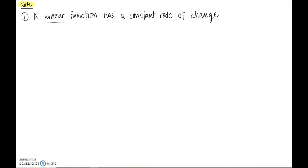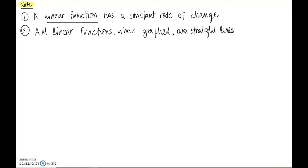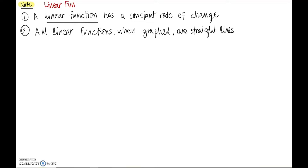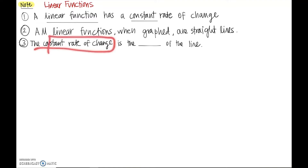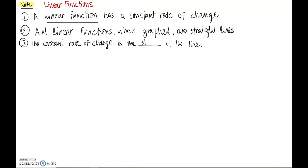A few notes to generalize from that last example about linear functions. First, a linear function will have a constant rate of change. Next, all linear functions, when you graph them, are straight lines. The third note: the constant rate of change — like 2.4 in the cheeseburger example — is a certain characteristic of the line. That constant rate of change is actually the slope of your line.